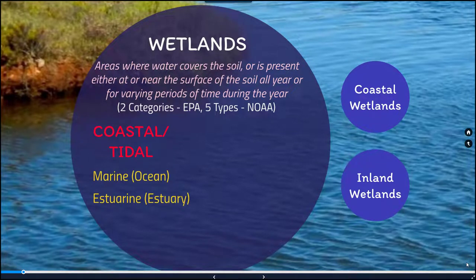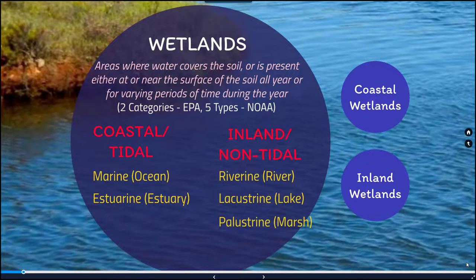First, we have the coastal or tidal categories of wetlands, which include marine or ocean wetlands and estuarine or estuary wetlands. Secondarily, we have three different inland and non-tidal forms of wetlands, which includes a riverine or river system, a lacustrine or lake wetland, and a palustrine or marsh wetland.